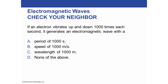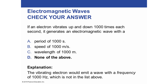Let's do a review question. If an electron vibrates up and down a thousand times each second, will it generate an electromagnetic wave with a period of a thousand seconds, a speed of a thousand meters per second, a wavelength of a thousand meters, or none of the above? The answer is none of the above. The vibrating electron would emit a wave with a frequency of a thousand hertz, and remember a period is one over the frequency.